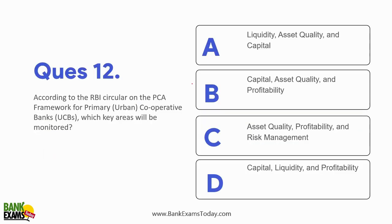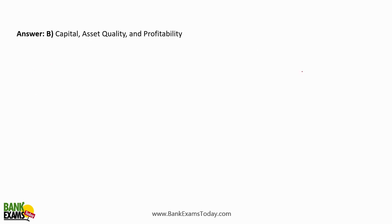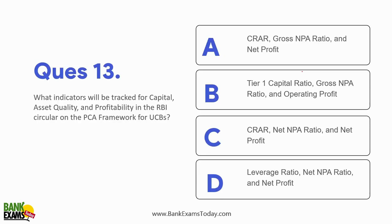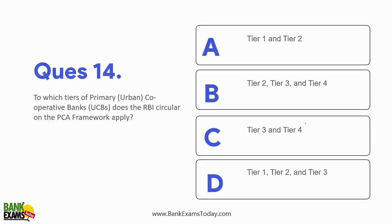If you remember this table, it would be very easy to answer all questions. As per the PCA framework, the key areas that are monitored are capital, asset quality, and profitability. This PCA framework would be implemented to Tier 2, Tier 3, and Tier 4 - except Tier 1.